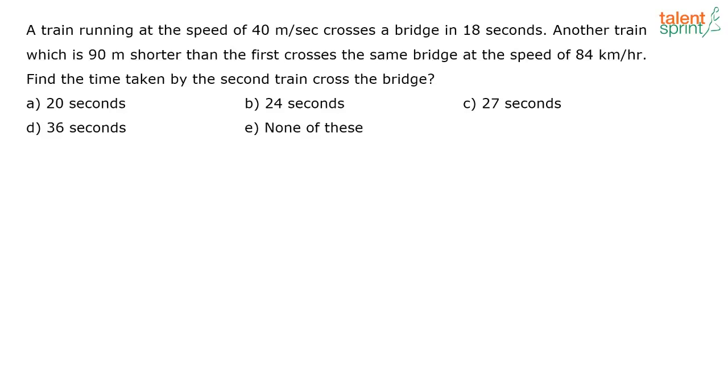Whenever we see such questions, our normal tendency will be to say that let the length of one train be L, the length of the other train is L minus 90, and speed of this train is 40 meters per second and try to solve it like this. Not required. Don't do it this way.